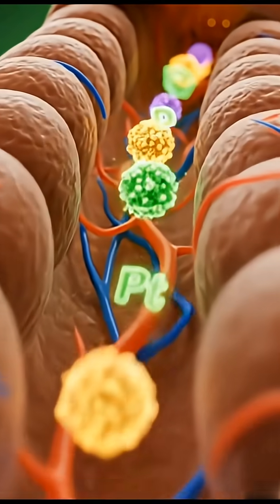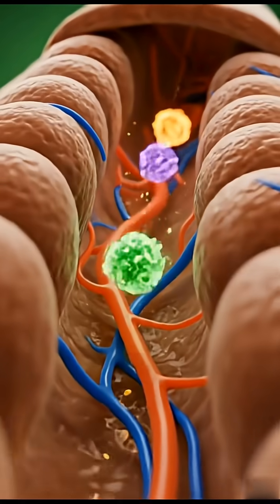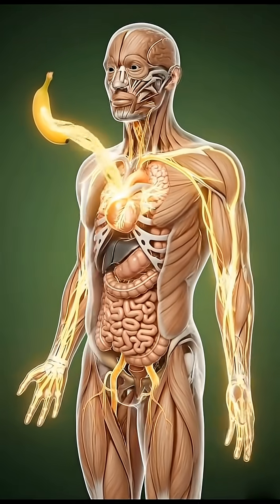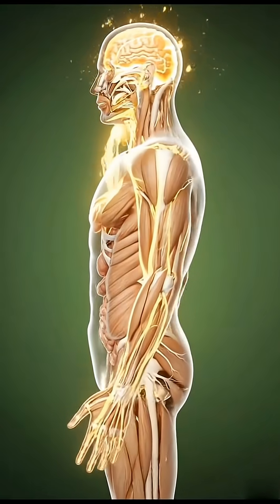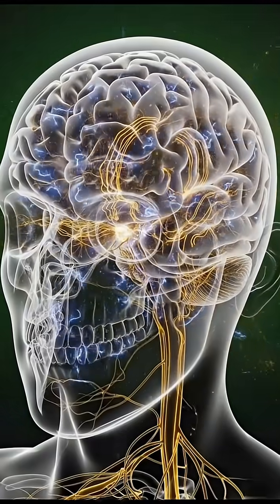Inside the mouth and down the esophagus, soft banana pulp reaches the stomach. Here, powerful acids and enzymes begin breaking it down, transforming natural sugars, fibers, and minerals into molecular fuel.